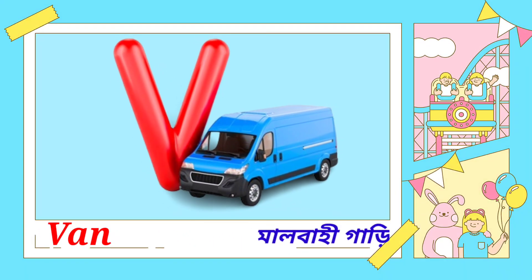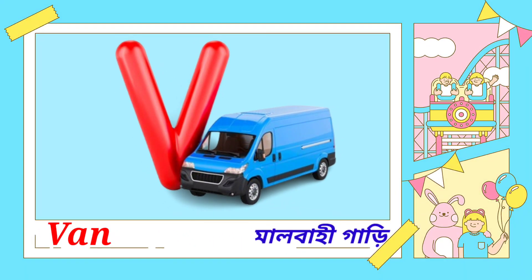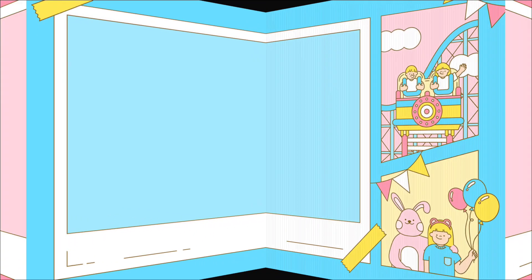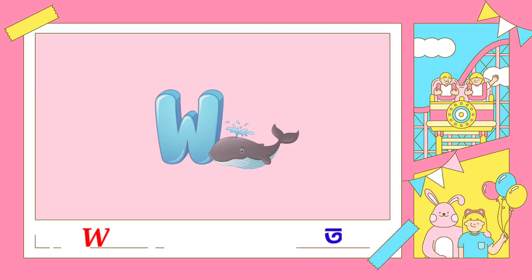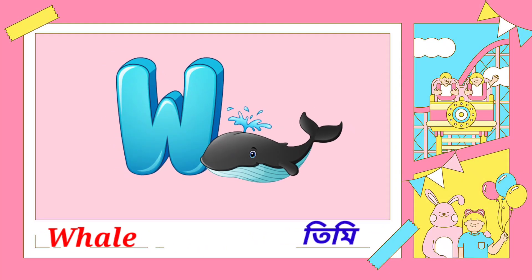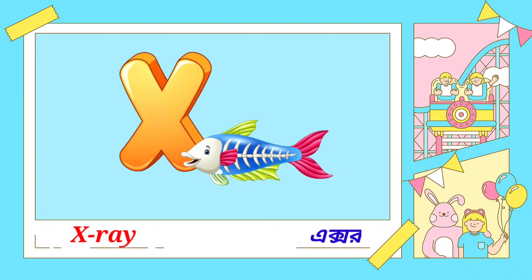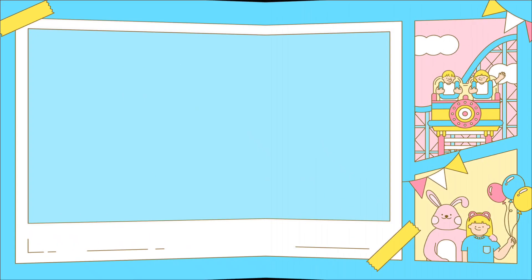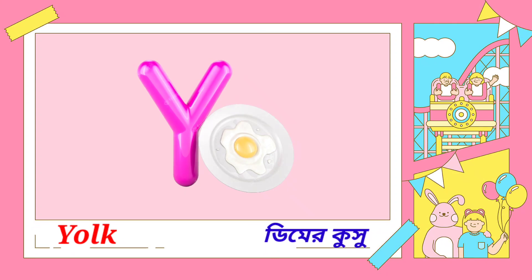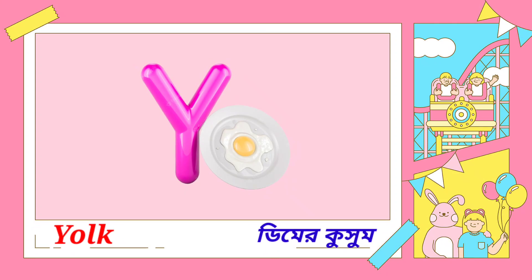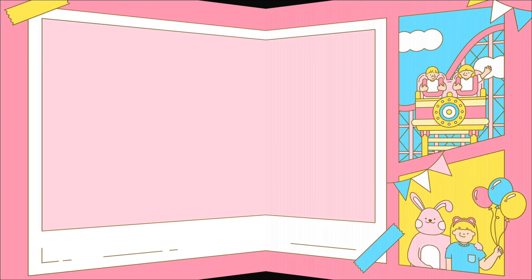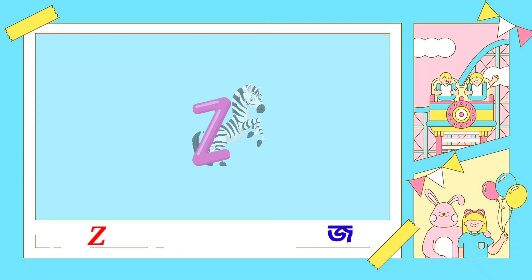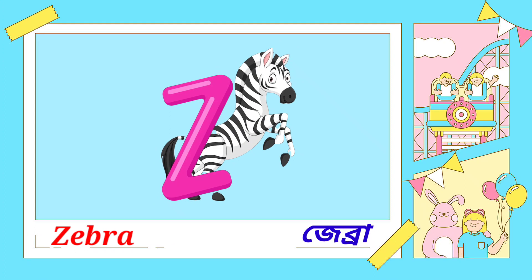V for van. W for whale. X for extra fish. Y for yoke. Z for zebra.